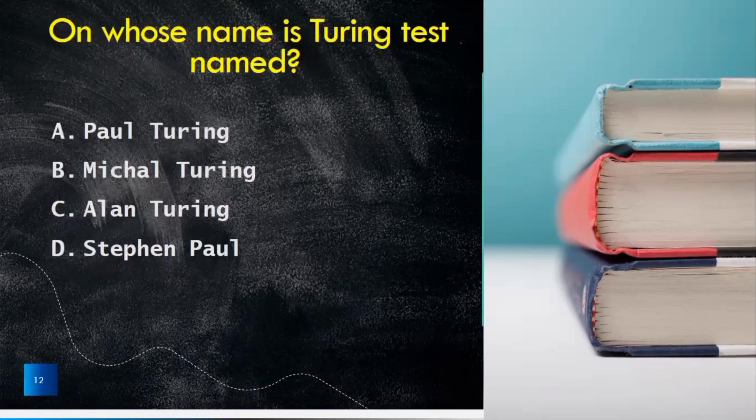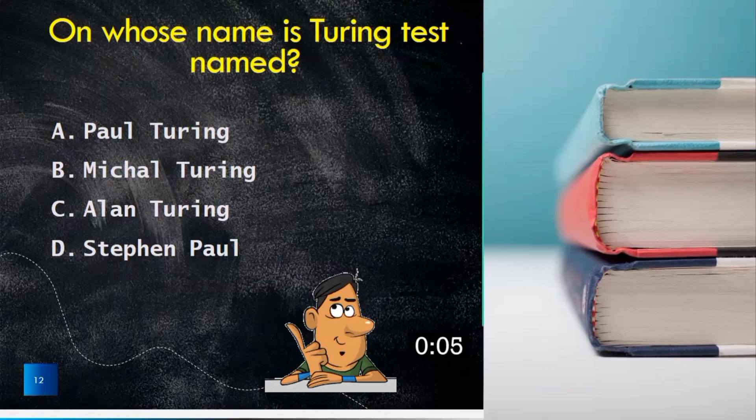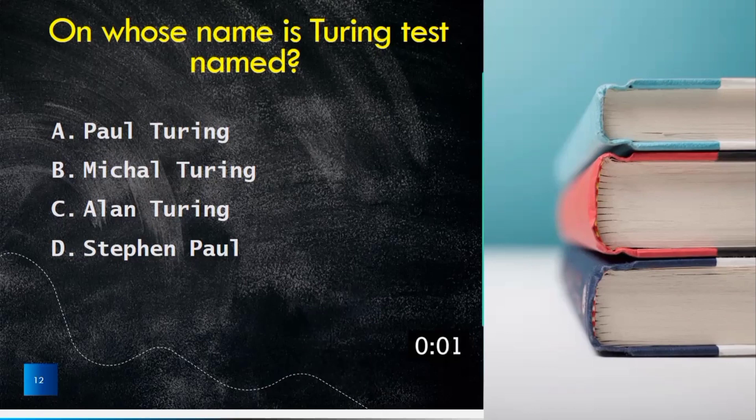The question number 12 is on whose name is the Turing test named? Paul Turing, Michael Turing, Aaron Turing, Stephen Powell. The right answer is Alan Turing.